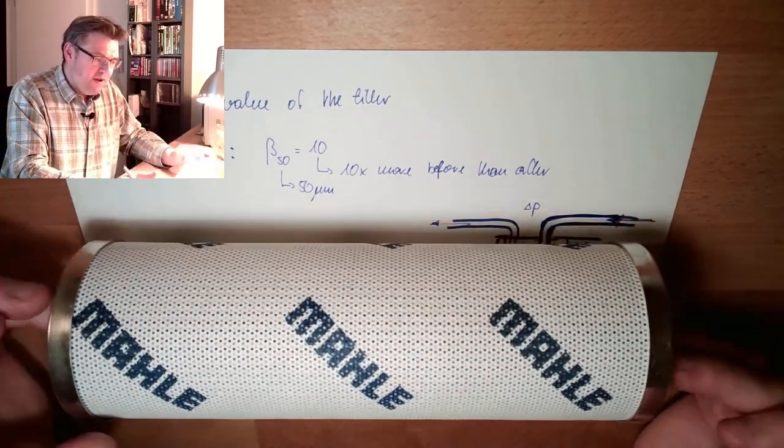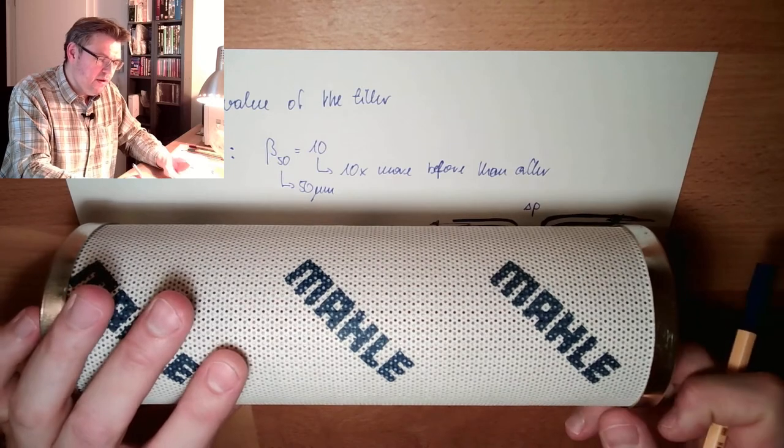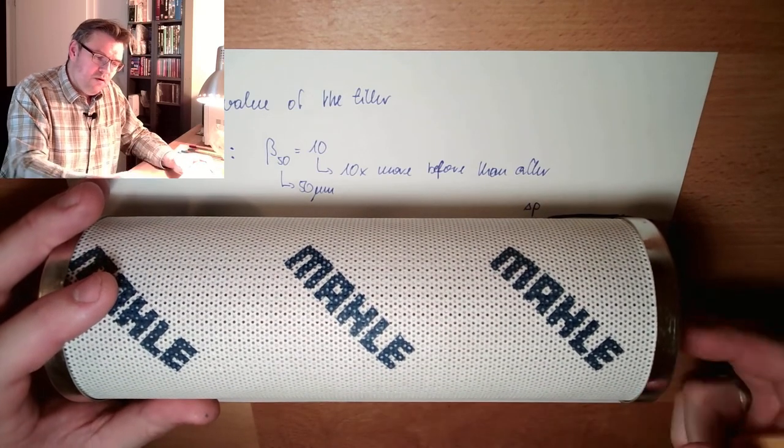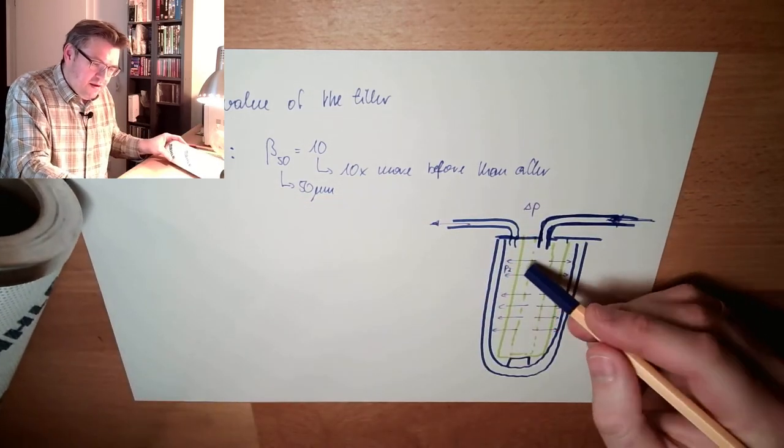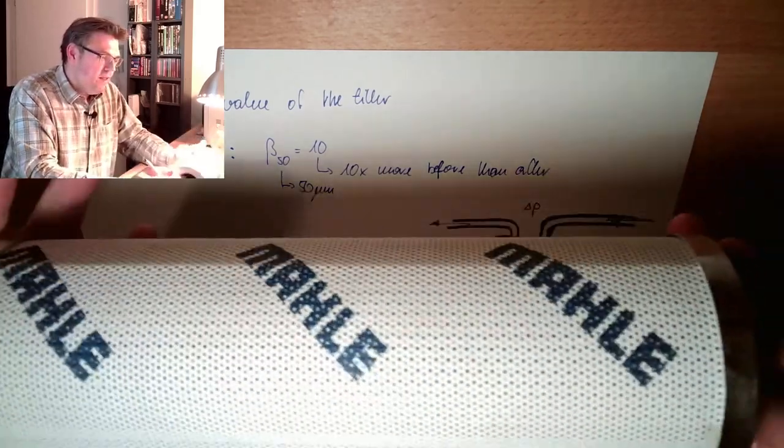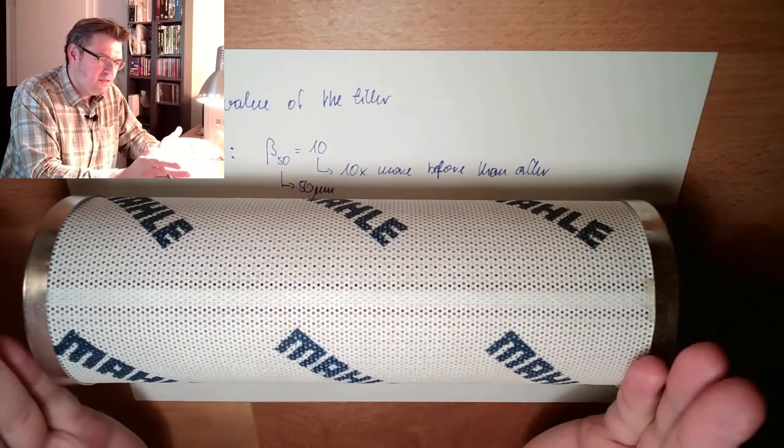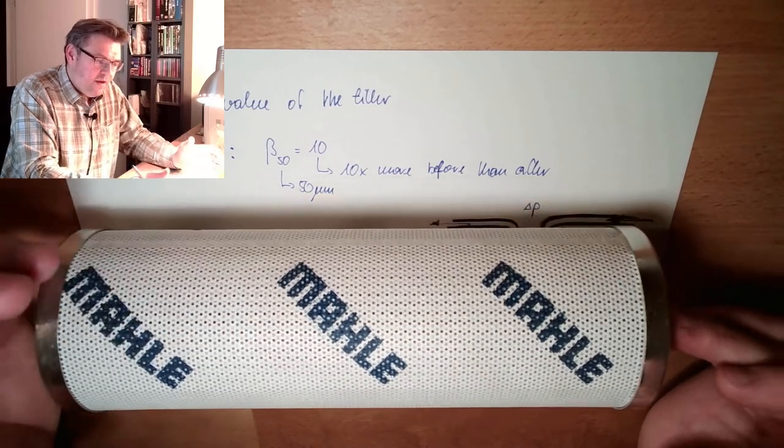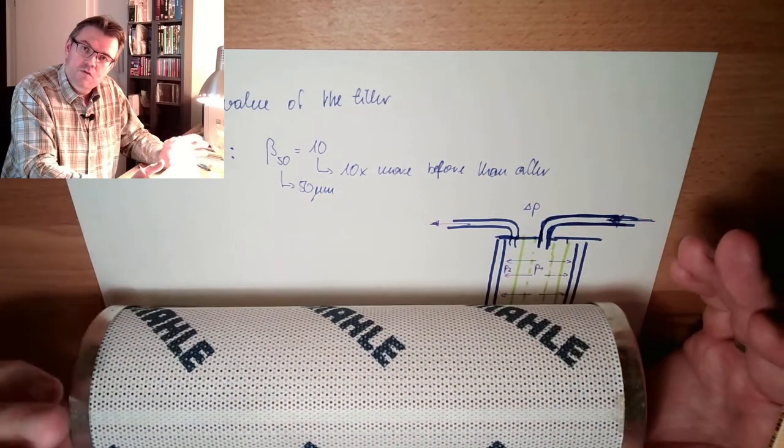You really have to be aware of this. The peak values of pressure difference between the dirty and the clean side is when you have a lot of oil running through. Because then, simply, this will not pass. This is also a certain value for a filter. This is why there are filters of different sizes.